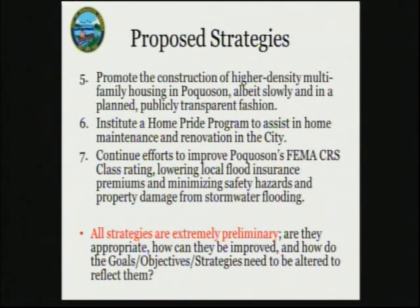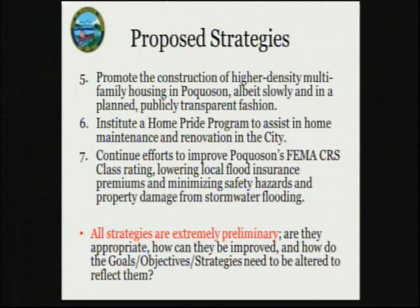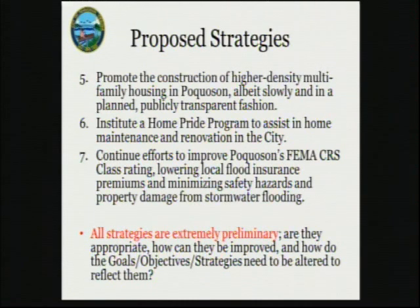Strategy five is the promotion of higher-density multi-family housing in Pocosin, albeit slowly and in a planned, publicly transparent fashion. This is simply calling for the addition of more R3 multi-family housing, done in a planned way, possibly through the use of a planned unit development overlay district such as what was used in Legacy of Pocosin.